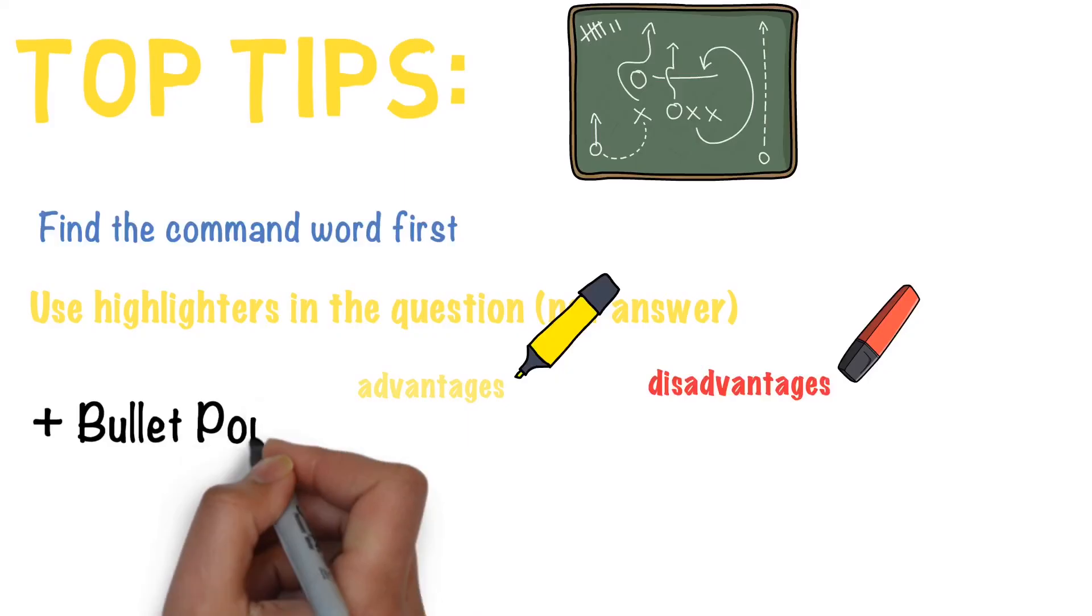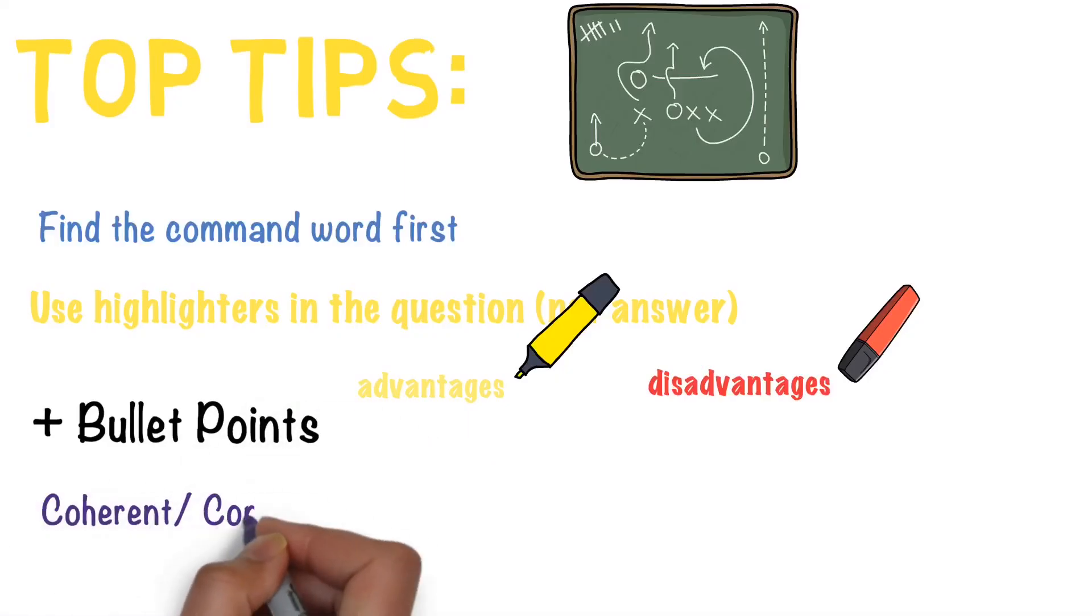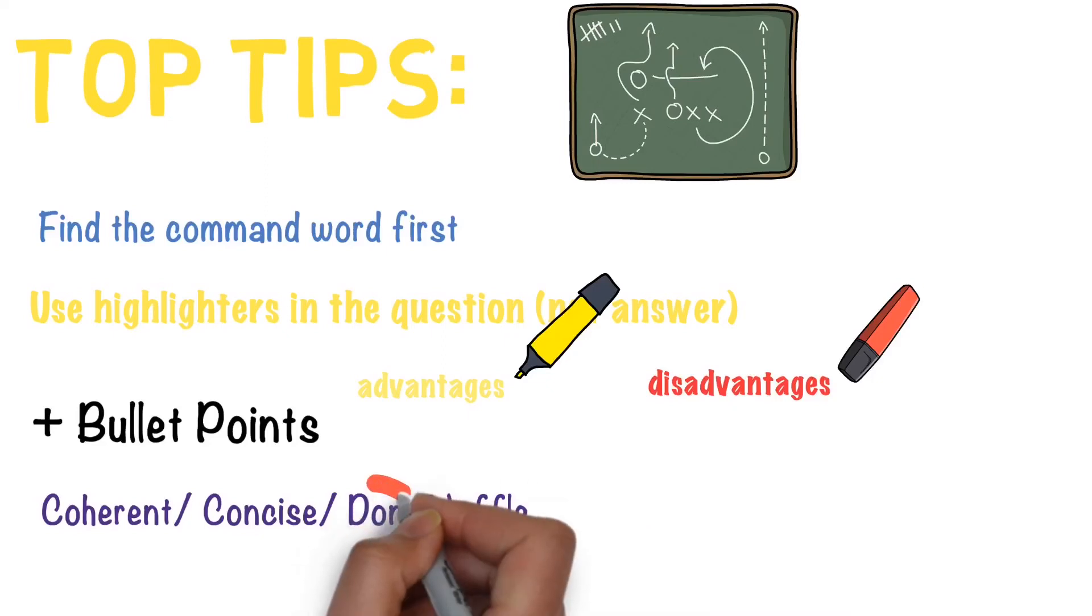Also you can use bullet points but you have to write in full sentences. It has to be coherent and concise and don't waffle. And a big mistake that I see students doing is because they're given so much space to actually write their answers, what they do is they write too much and end up contradicting themselves and this costs them big marks.